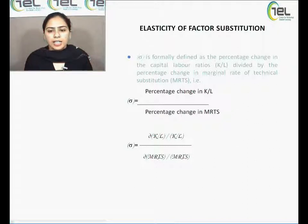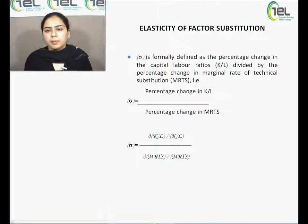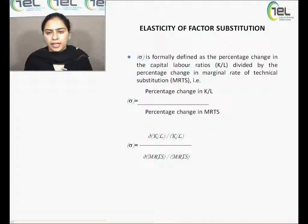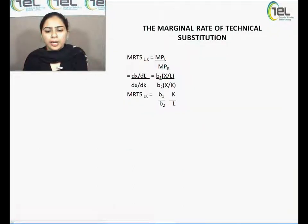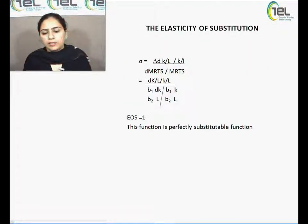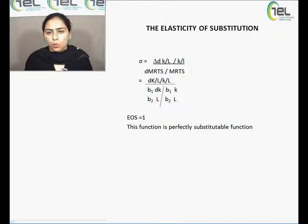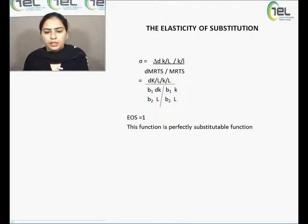The next characteristic is elasticity of factor substitution. It is defined as the percentage change in the capital-labour ratio divided by the percentage change in the MRTS: (ΔK/L)/(K/L) divided by (ΔMRTS/MRTS). Substituting the value of MRTS = (B1/B2)*(K/L) into the formula, all K/L terms cancel, and we get the elasticity of substitution equal to 1, reflecting that this function is a perfectly substitutable function.